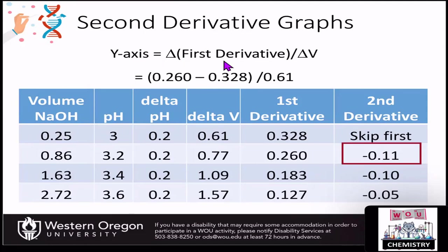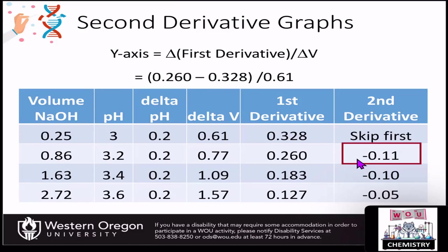Our y-axis is the change in the first derivative over the change in the volume. We had those three new columns added to get our first derivative; now we're going to add one more column. Skip and don't put anything in the first box — your second derivative starts at the second position. We're going to take the change in the first derivative, which is this value minus this value, then divide that whole thing by the volume change — delta V. So when setting up this cell, you put: equals, parentheses, this value minus this value, end parentheses, divided by your delta V.